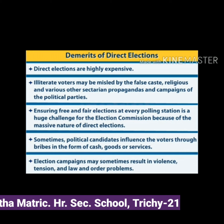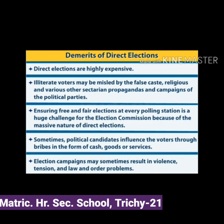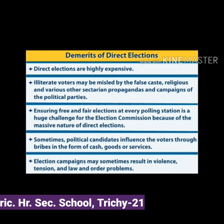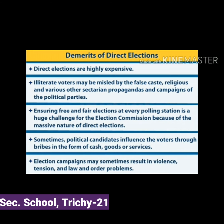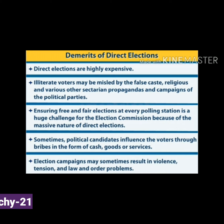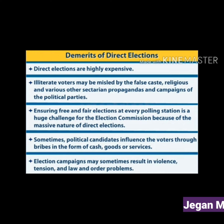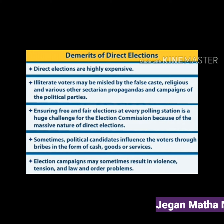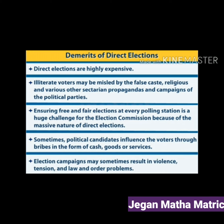Demerits of direct election: direct elections are very expensive. Illiterate voters sometimes get misguided by false propaganda and campaigning based on caste, religion, and various other sectarian considerations, which pose serious challenges. Since conducting a direct election is a massive exercise, ensuring free and fair elections at every polling station is a major challenge to the Election Commission. There are also instances of political candidates influencing voters through payment in the form of cash, goods, or services.